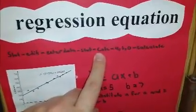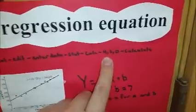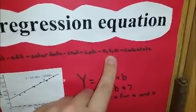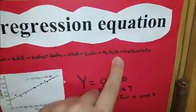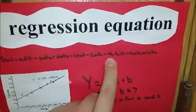You hit stat calc. Now some calculators you have to do choice four for a linear regression, choice six if you want to do a quadratic, and choice zero if you want to do exponential. So this is the linear so you do choice four.